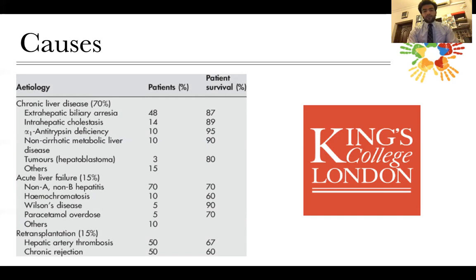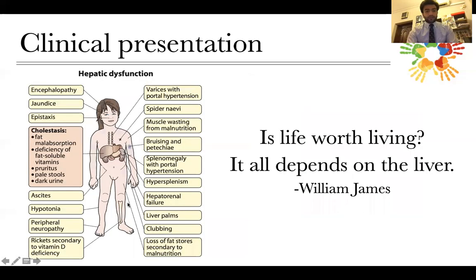Polycystic liver disease involves cysts built inside the liver — also congenital — leading to intrahepatic failure. Cystic fibrosis is very common in Western countries, and liver disease in cystic fibrosis is the second most common cause of death after pulmonary disease. Primarily there will be steatosis, but the cause of death is fibrosis due to intrahepatic disease. Other causes fall under acute and re-transplantation categories, which are not the topic for today.